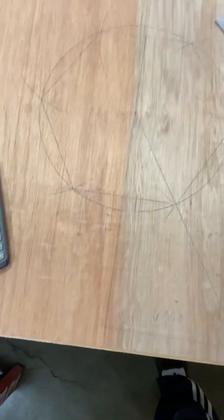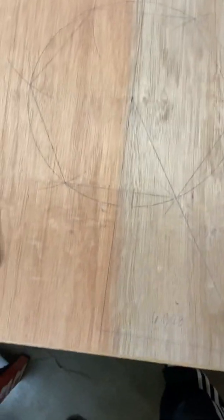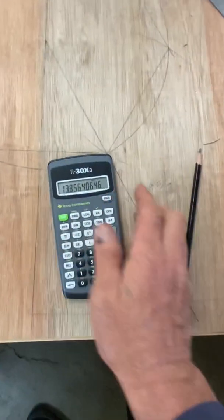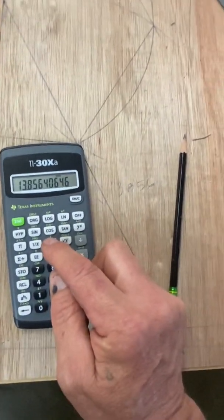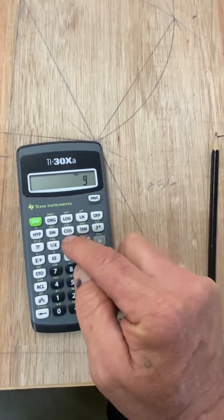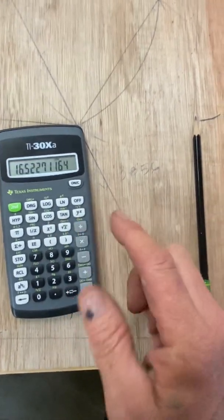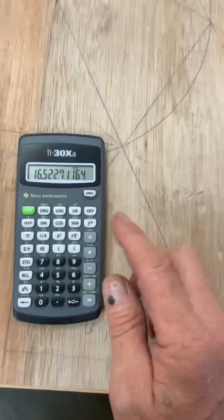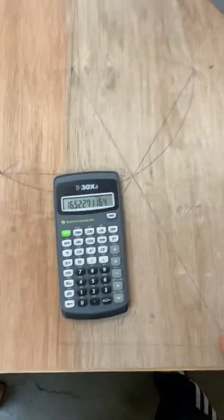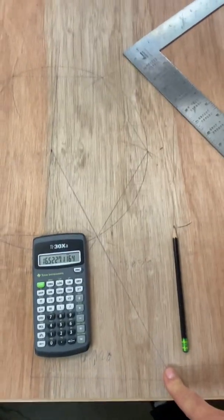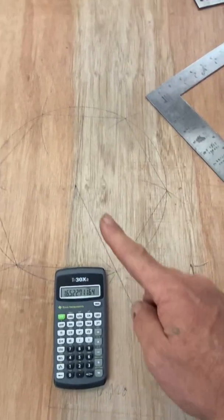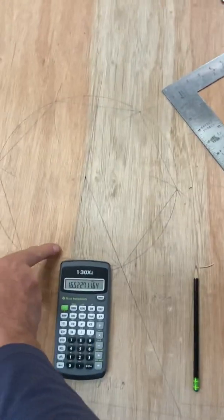Or we could, since we know that it rises nine, we already have this number 13.856, we could say squared plus nine squared equals square root of, and that'll give us the hypotenuse up the rake which looks like 16.52. So this hip runs 16.52 up the rake for every 12 inches that this common rafter runs on the level.